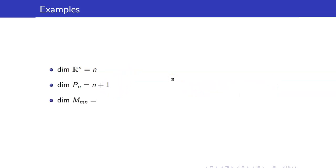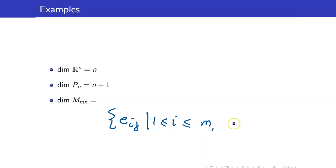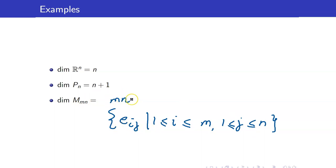What about the dimension of the set of matrices of size m by n? A standard basis for this would be your E_ij's where i runs from 1 to m and j runs from 1 to n, because you have m rows and n columns. Therefore, we have m times n elements.